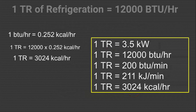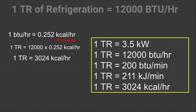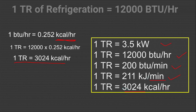In energy calculations, sometimes we use Kilowatt-hour as a unit. As we know, 1 BTU per hour is equal to 0.252 Kilocalories per hour. Hence we can convert 1TR into Kilocalories per hour, which gives 3,024 Kilocalories per hour. These are all the major units of 1TR of refrigeration: 1TR equals 3.5 KW, or 12,000 BTU per hour, or 200 BTU per minute, which equals 211 KJ per minute, or 3,024 Kilocalories per hour.